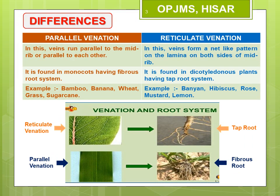Now we can easily differentiate between parallel venation and reticulate venation. Parallel venation is the venation in which the veins either run parallel to the midrib or parallel to each other. Whereas reticulate venation is the venation in which the veins form a net-like pattern on the lamina on both sides of the midrib. Monocots are the plants in which the seed bears only one cotyledon, like maize. Dicotyledonous plants bear two cotyledons, like rajma. You can observe parallel venation in plants like bamboo, banana, wheat, grass, and sugarcane.